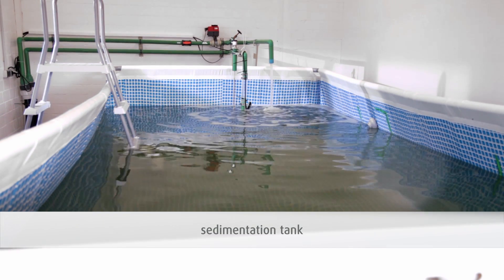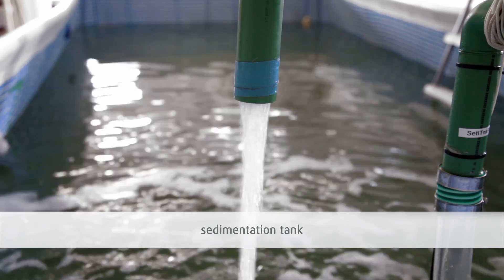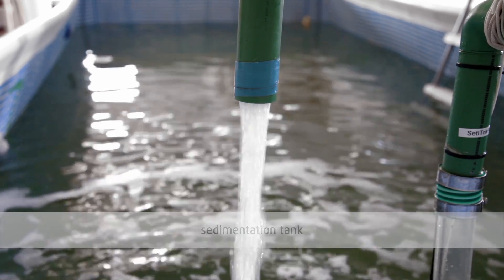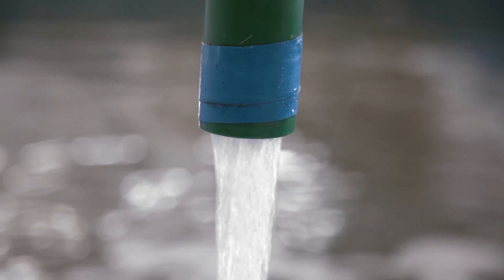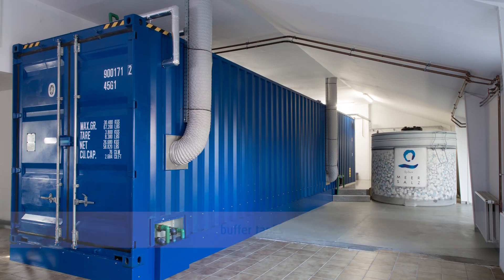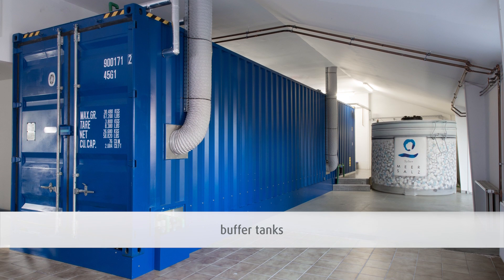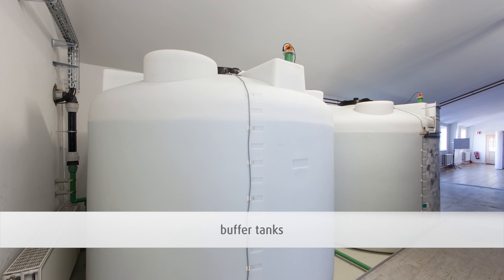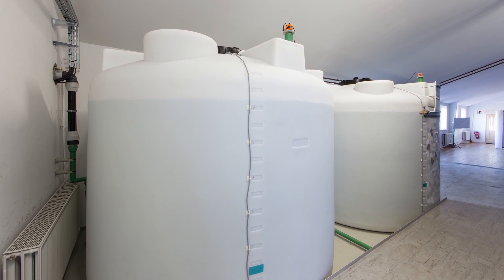The process starts by guiding North Sea water into a sedimentation pond where it remains until all suspended sediments have settled. From there, the North Sea water that is now free from suspended sediments enters into the buffer tanks. These tanks safeguard a continuous production.